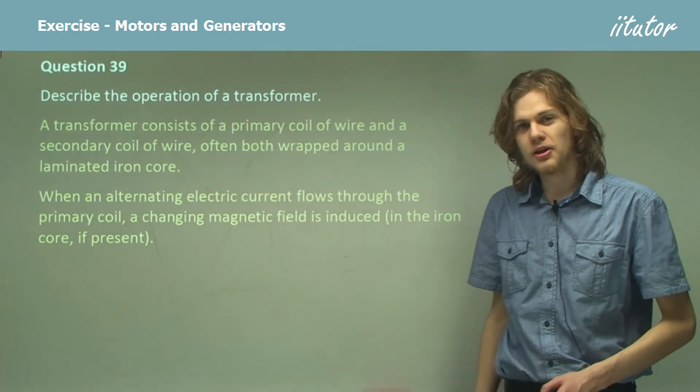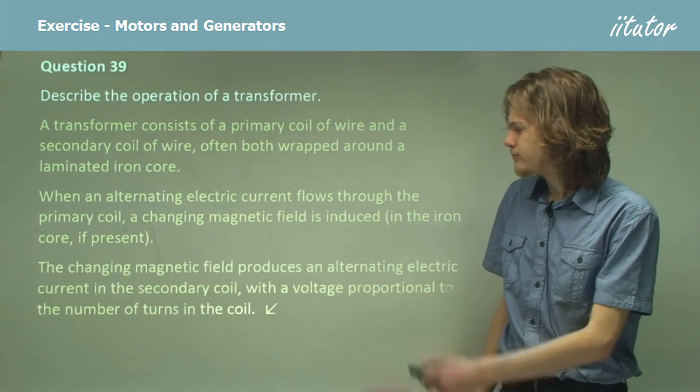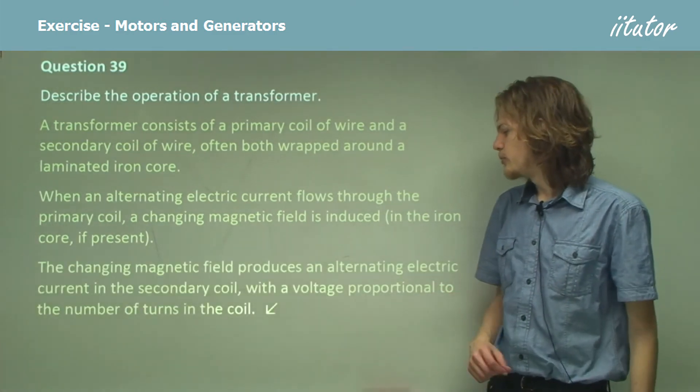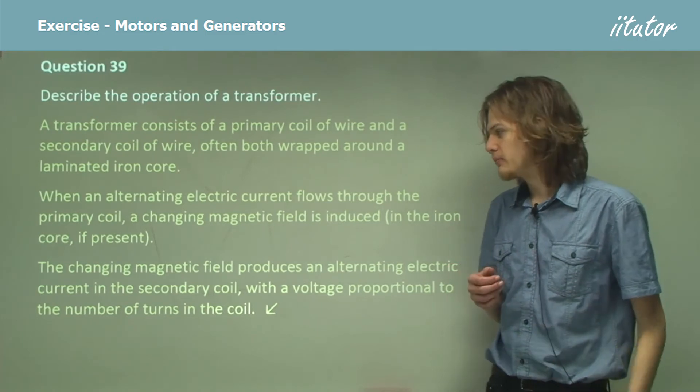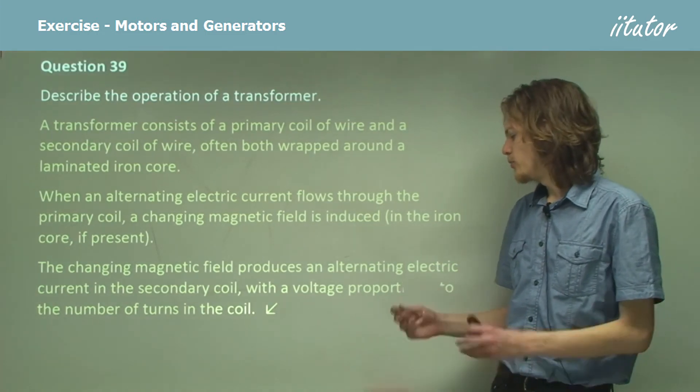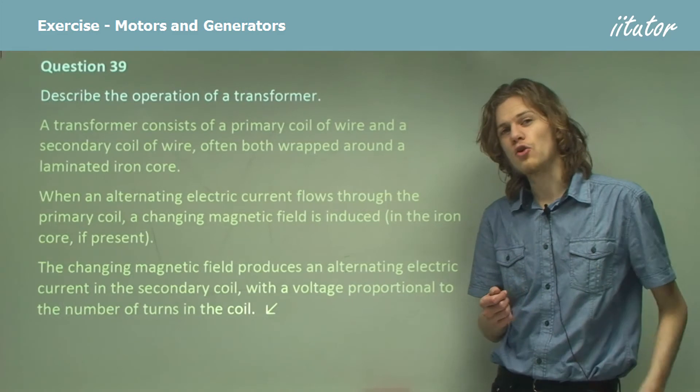So how does that affect the secondary coil? Well, the changing magnetic field produces an alternating electric current in the secondary coil with a voltage proportional to the number of turns in the coil.